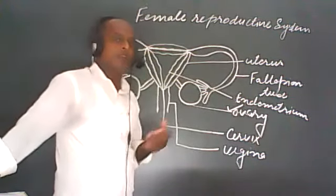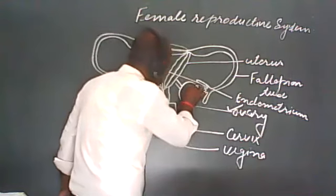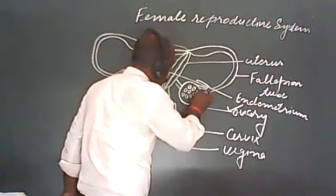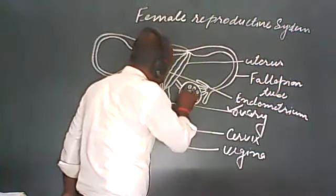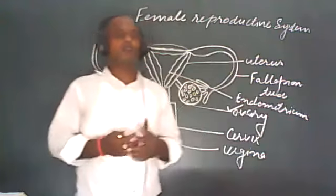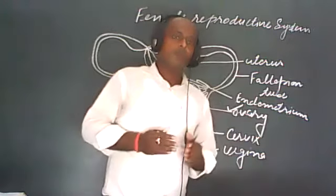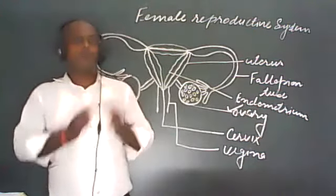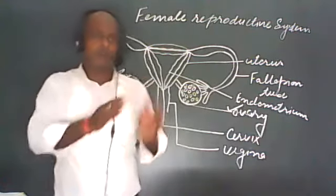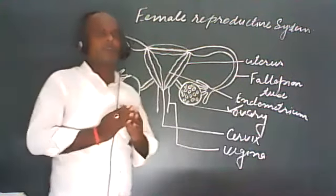From the ovary there are immature ova. When a girl child is born, there are many immature ova present — more than thousands of ova are present in the female baby. When she starts to reach puberty stage, the number of ova becomes reduced day by day.